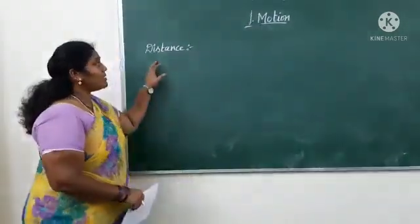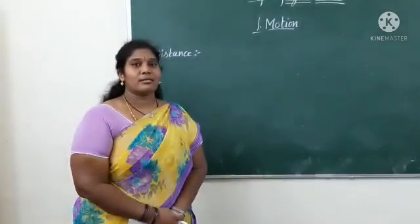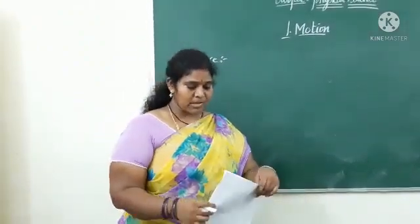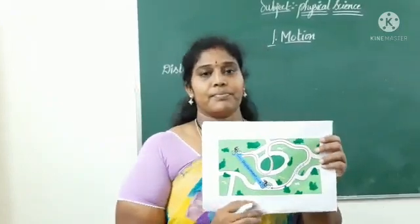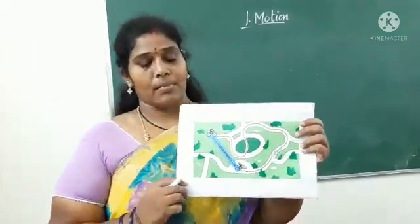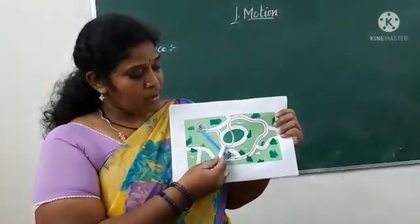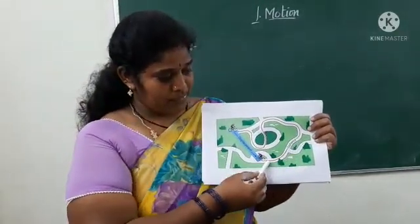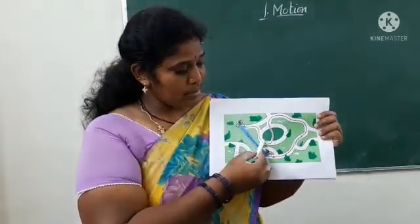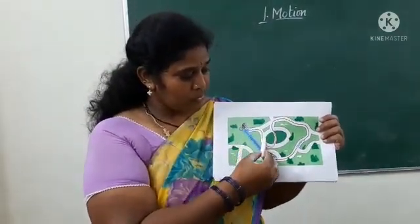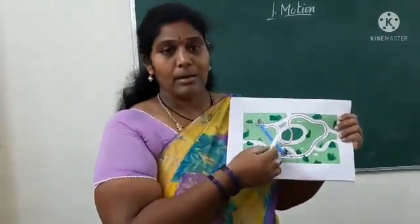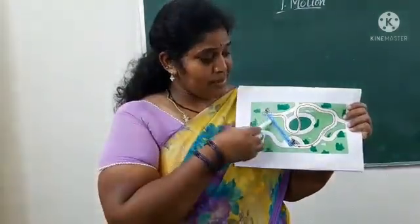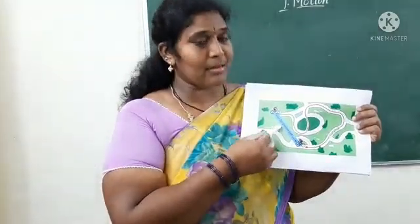What do you mean by distance? You easily say that it is the path, but in science it is different. If you observe this picture, a man is going to reach another man in a certain direction. In science, the path following that direction is called distance. And the same person trying to reach the other person in a specified direction is called displacement.